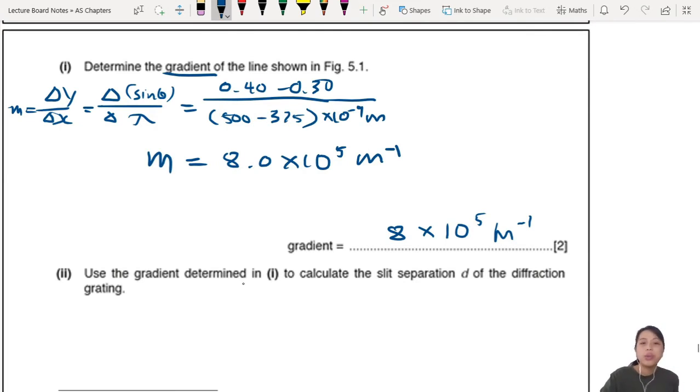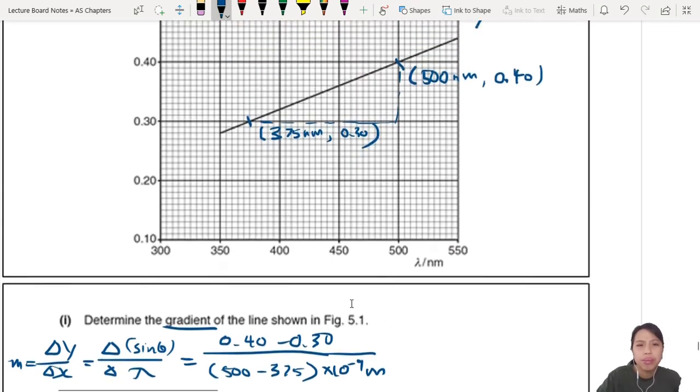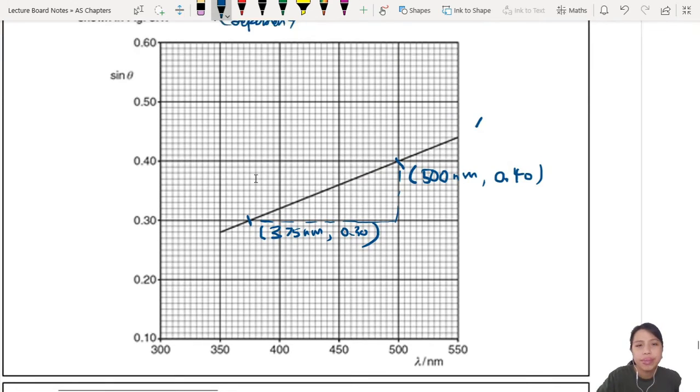Now second part - whoa, use your gradient to calculate the slit separation d. Now you must use your gradient here. It's like paper 3. You find a gradient, you use a gradient to calculate something in an equation. But what is the equation though? Check back at this - we are plotting our y as sin θ and our x-axis is lambda.